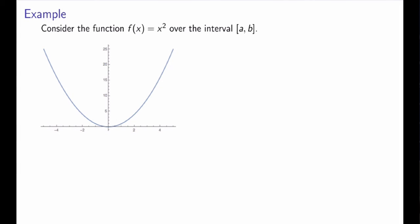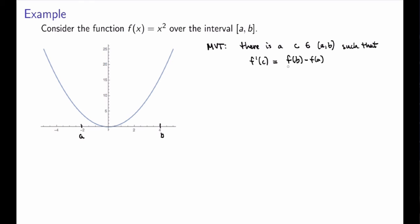Let me now give an example of what the mean value theorem says for a concrete function. I chose f(x) = x², which is continuous and differentiable, so I can apply the mean value theorem on an interval from a to b. The mean value theorem says there exists a c between a and b such that the derivative at c — the slope of the tangent line — equals the difference quotient, or slope of the secant line.